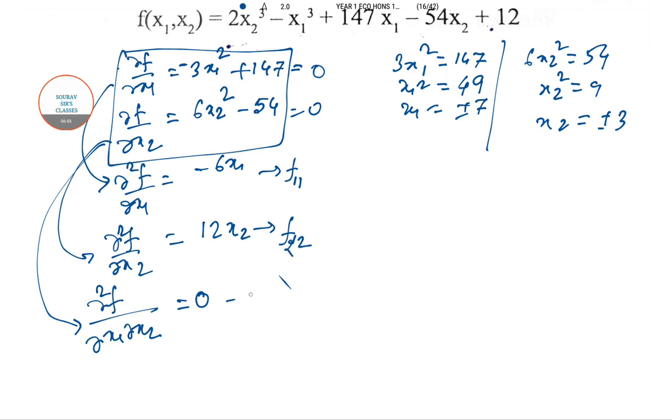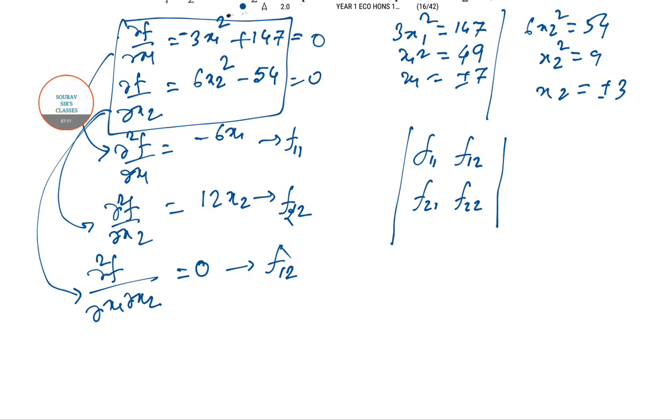So if we take this as f11, this as f22, and this one as f12, then we have to form this: f11, f12, f21, f22, and we need to check the values.